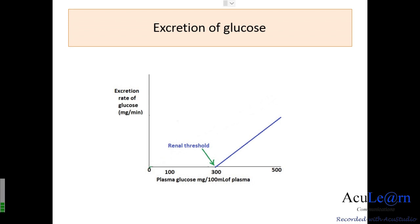The next figure plots the excretion rate of glucose in relation to plasma glucose concentration, expressed in milligrams per 100 ml of plasma. Once the carriers reach saturation, glucose excretion begins. The plasma concentration at which glucose first appears in the urine is called the renal threshold for glucose. Below the renal threshold, reabsorption is complete and no glucose is excreted in the urine.